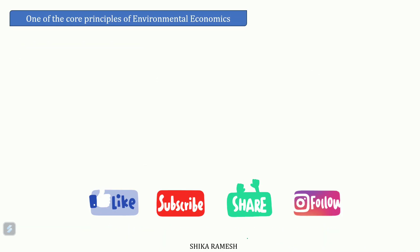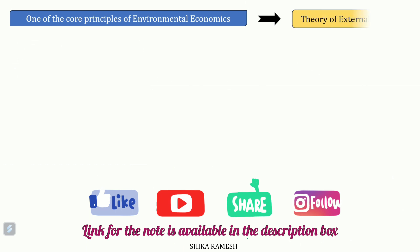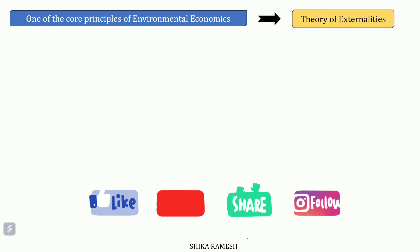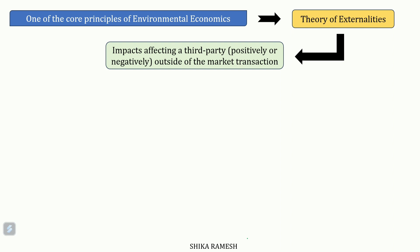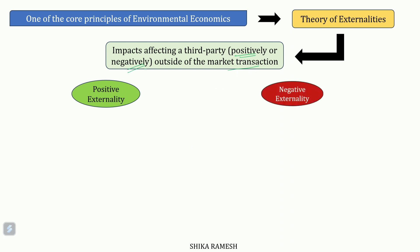One of the core principles of environmental economics is the theory of externalities. Externalities are basically positive or negative impacts affecting a third party who can be a producer, consumer, or even a community outside the market transaction. If the impact to the third party is positive, it is a positive externality, and if the impact is negative, it is a negative externality.